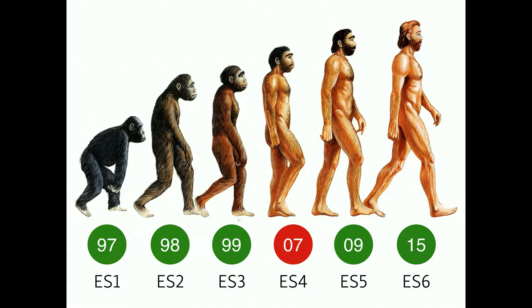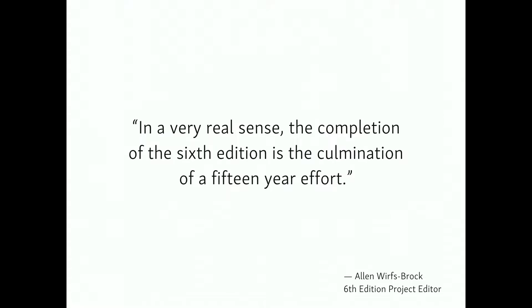The first edition was called ES1, actually ECMA262, released in 1997. We had good yearly releases up until ES4, then an eight-year gap — it was abandoned due to political differences concerning language complexity. Then finally ES5 in 2009, and another big gap until ES6 in 2015. The project editor for ECMAScript said: in a very real sense, the completion of the 6th edition is the culmination of a 15-year effort.